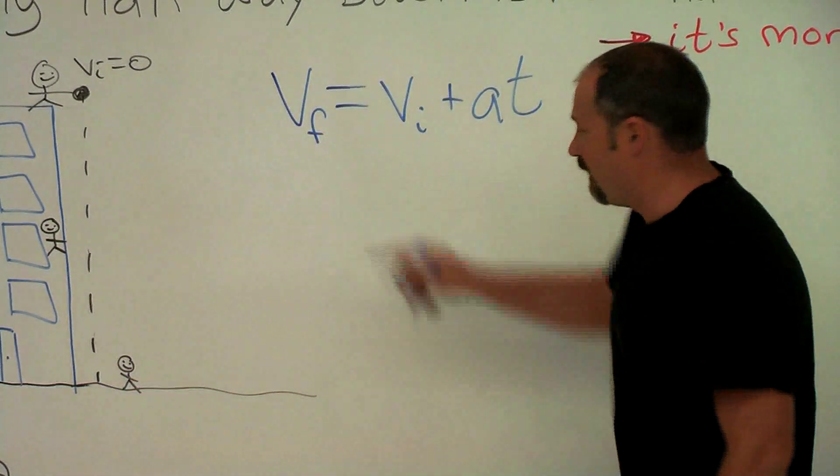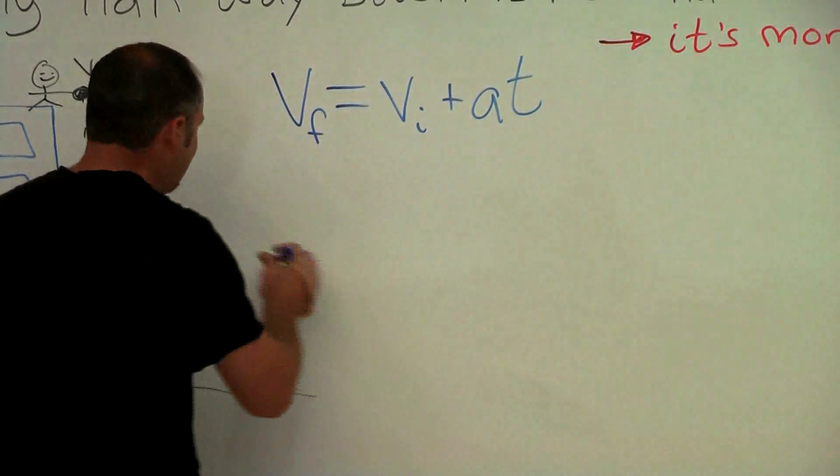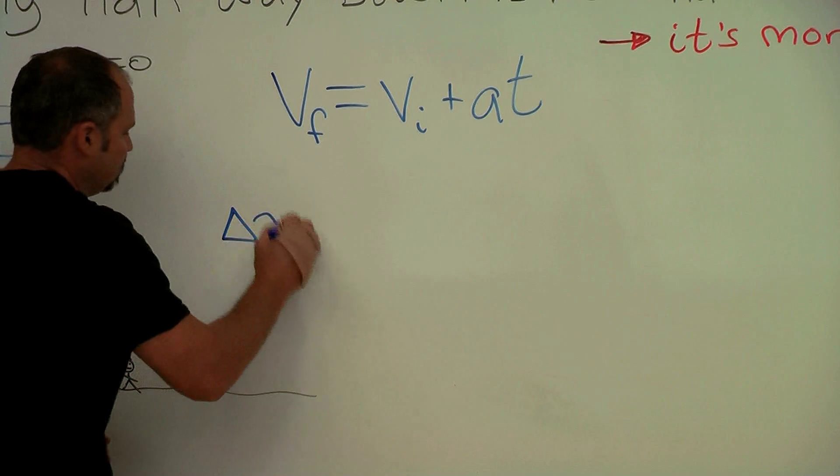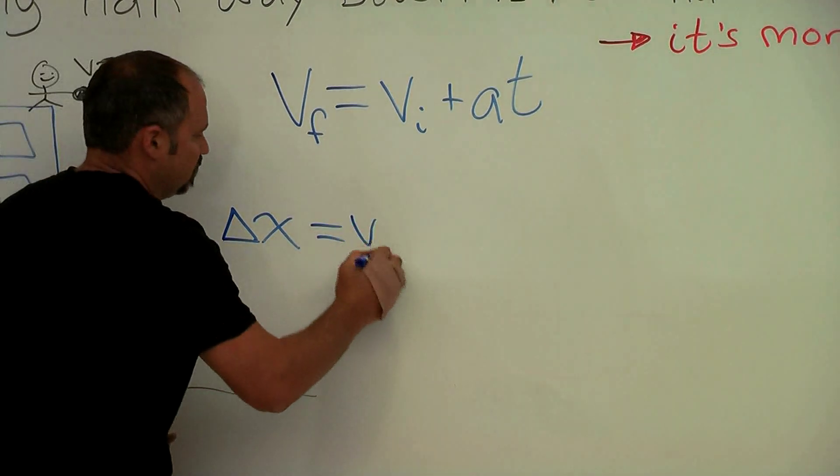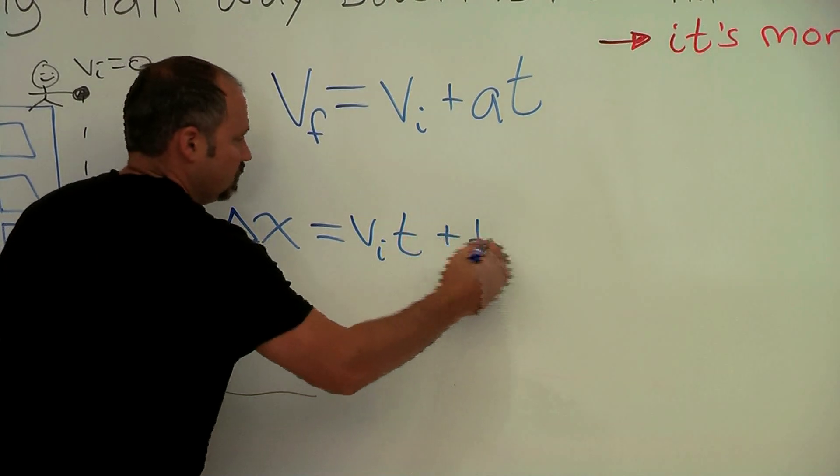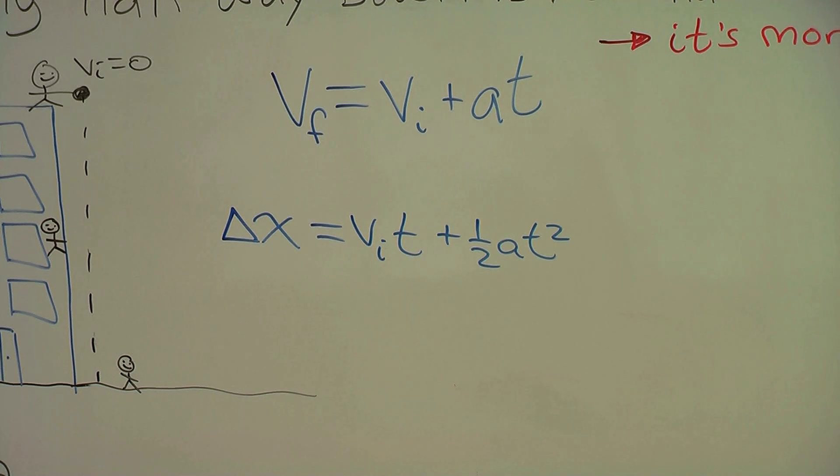If we know the time it takes to go from here to there, then we can find out the final speed. We can find the time using our distance equation: the change in position equals the initial speed times time plus one half at squared.